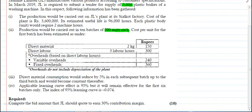The first batch cost per unit has been estimated: direct material, labor, and overheads. Direct material consumption would reduce by 5% in each subsequent batch up to the third batch and will become constant thereafter. Applicable learning curve effect is 95%, but it will remain effective for the first six batches only. The index of 95% learning curve is negative 0.074. Required: Compute the bid amount that JL should quote to earn 30% contribution margin.